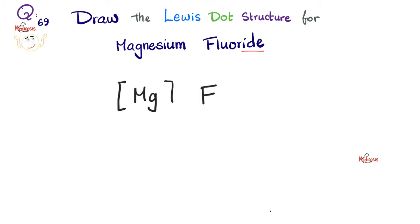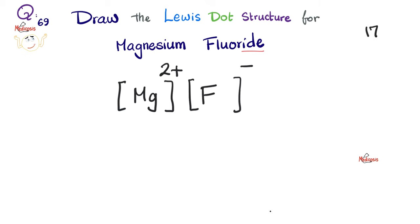Metals tend to form positive ions; non-metals form negative ions. Magnesium is in group 2A, so each magnesium atom needs to lose two electrons to become Mg²⁺. Fluorine belongs to group 17, meaning it has seven electrons in the outermost shell. To achieve the octet, fluorine needs one extra electron — so it becomes F⁻. But since magnesium gives away two electrons and fluorine only accepts one, we need two fluorine atoms.